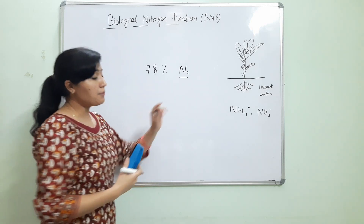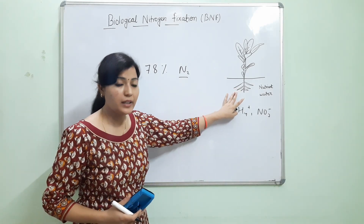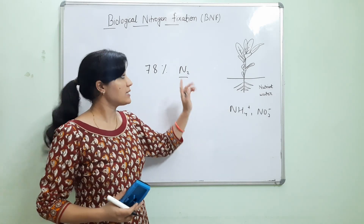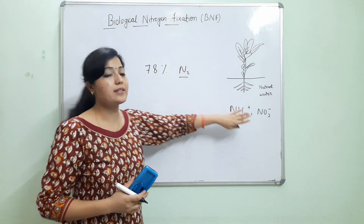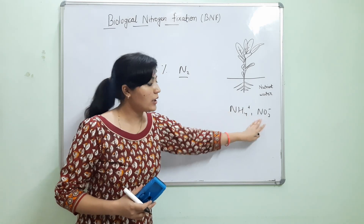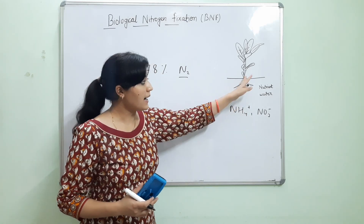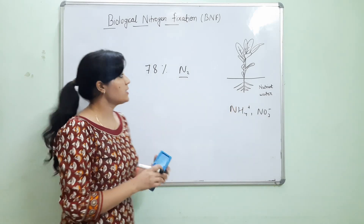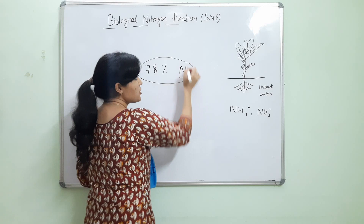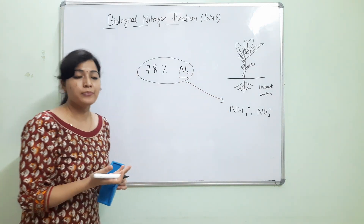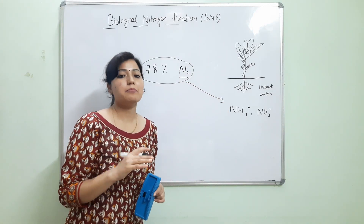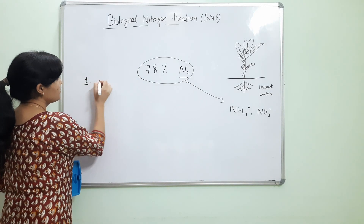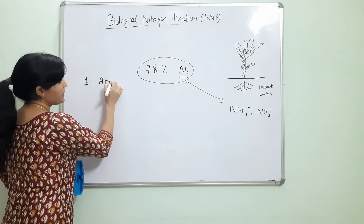Plants uptake nitrogen from the roots, so for this uptake, atmospheric nitrogen has to be fixed into the soil in inorganic form so that plant roots can easily absorb it. This fixation of nitrogen into a usable form can be done by three processes. Number one is atmospheric fixation.